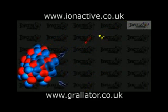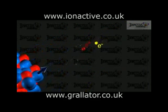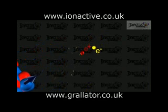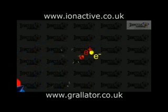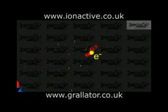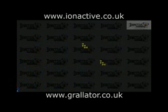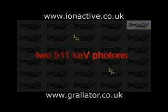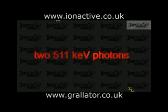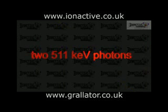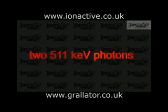Both particles will lose energy by emitting X-rays that will typically be of much lower energy than the original incident photon. Also, once the positron has lost sufficient energy, it will annihilate with an electron and produce two photons of 511 keV, half the threshold energy of the original incident photon for this reaction to occur.